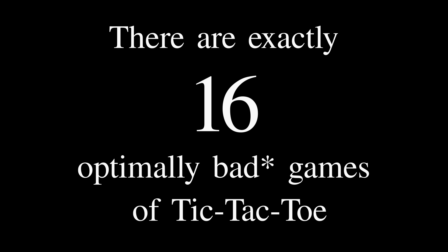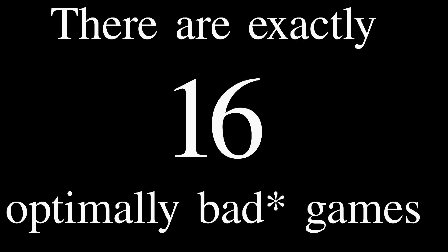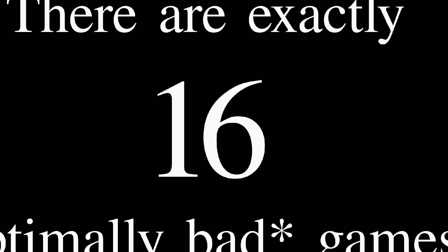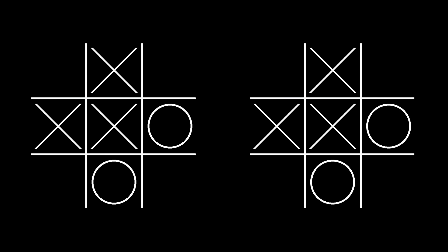There are exactly 16 optimally bad games of tic-tac-toe. Now, this number is actually double-counting symmetrical games. If you reduce by symmetry, there are only two different optimally bad games of tic-tac-toe, and even those are practically the same.